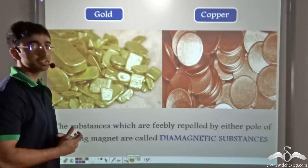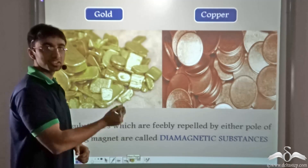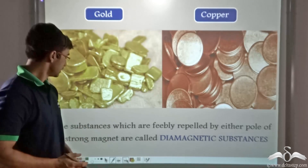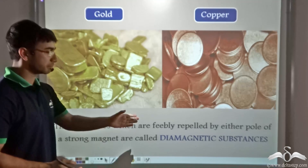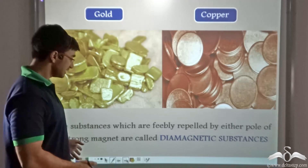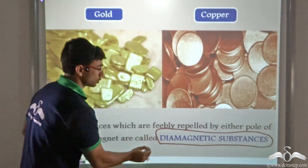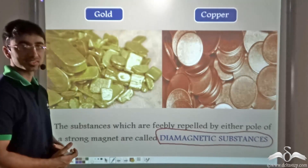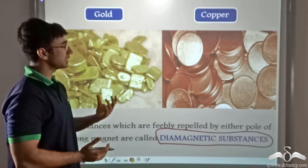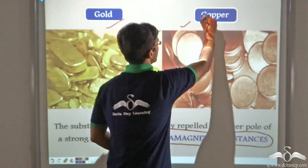On the other hand, we found yet some other substances which are neither feebly nor strongly attracted — they are simply repelled by the magnet. The substances which are feebly repelled by either pole of a magnet, be it south or north, are known as diamagnetic substances. These substances are not attracted but repelled, and the examples we saw were gold and copper.